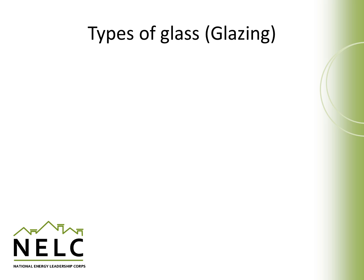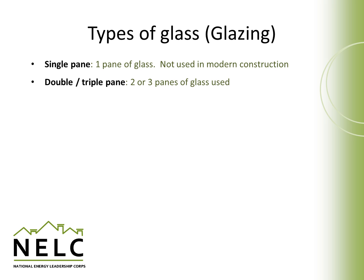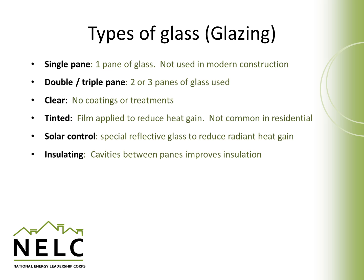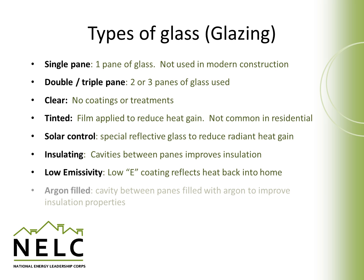Let's talk briefly about different types of glass and glazing. Single pane glass refers to just one layer of glass and is not used anymore in modern construction but may exist in older windows. More commonly now, double pane or in some cases triple panes of glass are used. Clear glass has no coatings or treatments. Tinted glass can be used to reduce heat gain, though it's not too common in residential construction. Solar control glass uses special reflective coatings to reduce radiant heat gain. Insulating glass has cavities to improve the overall insulation. Low emissivity glass has coatings that reflect heat back into the home. And argon filled glass uses argon to improve the overall insulating value. These types of glass can also be combined.